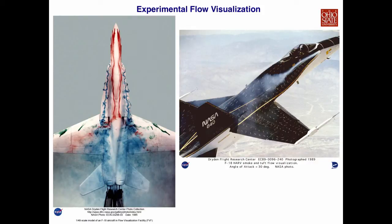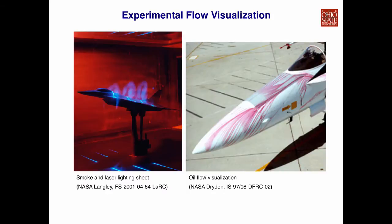Here, we can see a few examples of experimental flow visualization courtesy of NASA. The image on the left uses smoke to identify the flow trajectory. And the image on the right, you can see little tufts are placed across the body of the airplane, and is also combined with smoke, so you can see the flow pattern close to the aircraft body. And this is another couple examples using smoke and a laser lighting sheet in a wind tunnel, and also the image on the right, we use oil-based flow visualization.